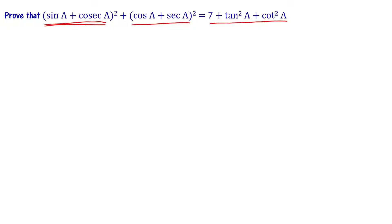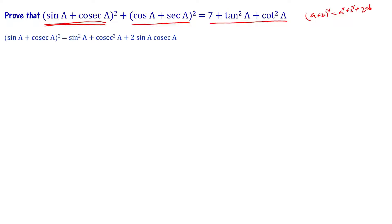Take the first part: (sin a + cosec a)². This is an (a + b)² formula. Applying it: sin²a + cosec²a + 2·sin a·cosec a.